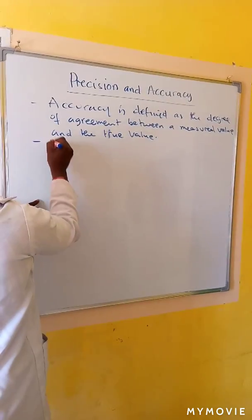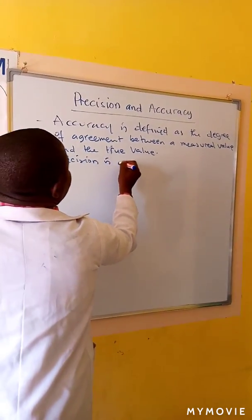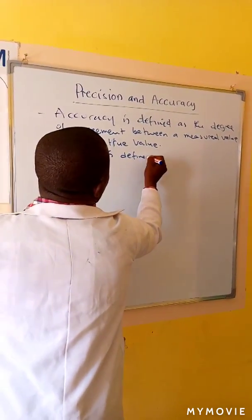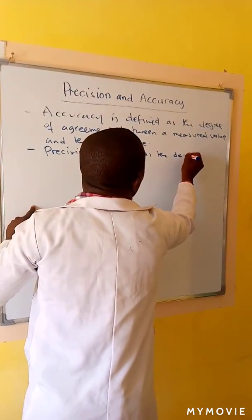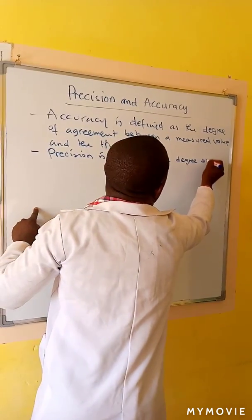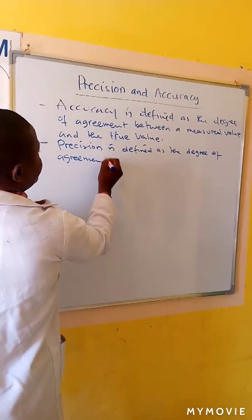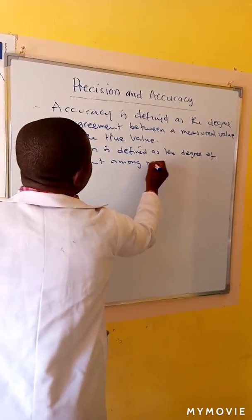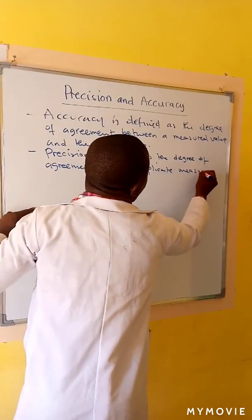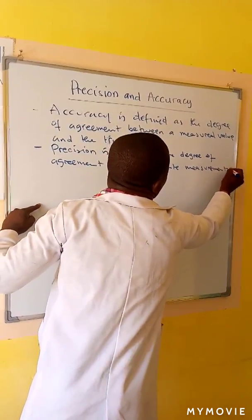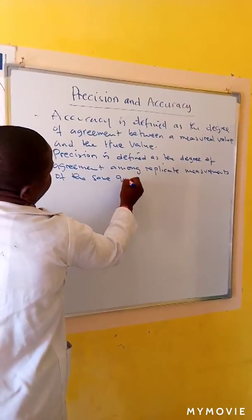Precision is defined as the degree of agreement among replicate measurements of the same quantity.